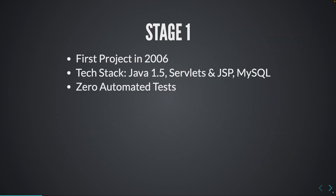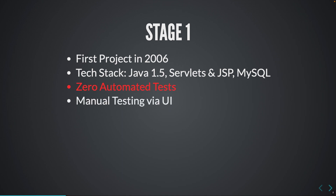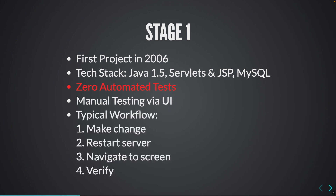In the beginning when I started my career as a Java developer in 2006, I started working on a project using Java 1.5, Servlets, JSPs and MySQL, and there were zero automated tests. Most of the time the testing was manual via UI. The typical workflow would look like: we make a change for whatever feature we are working on, restart the server, navigate to the screen we are working on, and verify the change.